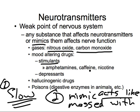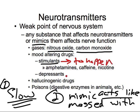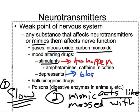Stimulants — such as amphetamines, caffeine, and nicotine — mimic neurotransmitters and cause reactions that shouldn't happen; they produce false signals. Depressants — such as marijuana — block communication from happening. So to summarize: stimulants cause things to happen that should not happen, while depressants block communication from happening.